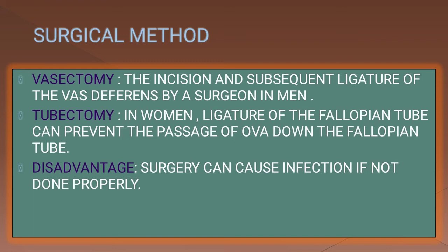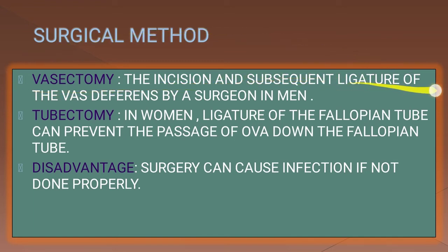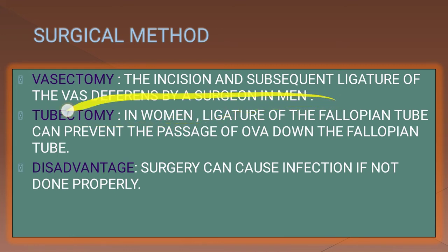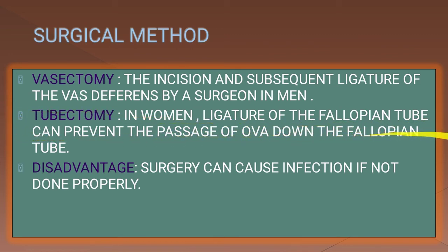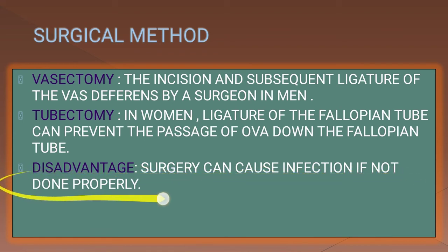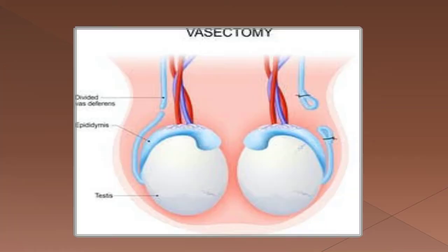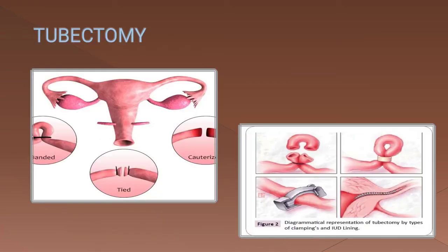Surgical methods include vasectomy and tubectomy. Vasectomy involves the incision and subsequent ligature of the vas deferens by a surgeon in men. Tubectomy in women involves ligature of the fallopian tube, which prevents the passage of the ovum down the fallopian tube. A disadvantage is that surgery can cause infection if not done properly. This figure shows vasectomy and the different methods of performing tubectomy.